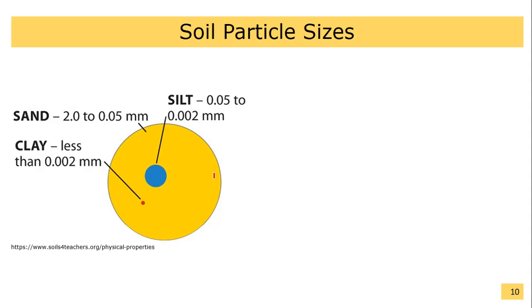Silt is the second largest particle and ranges in diameter from 0.05 to 0.002 mm. Clay is the smallest particle and is less than 0.002 mm or 2 microns.